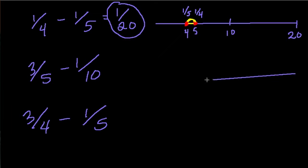Let's try another subtraction problem here. We have 3 fifths minus 1 tenth. So 5 and 10 both go into 10 very nicely. And this time, let's start with 3 fifths. What is 3 fifths of 10? Well, 1 fifth of 10 is 2, because 5 goes into 10 twice. So 4, 3, 2, 1.